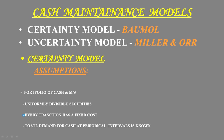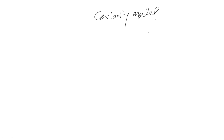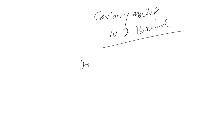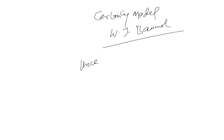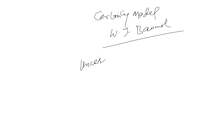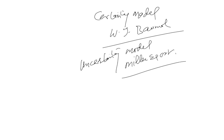The W.J. Baumol model is called the certainty model, and the Miller-Orr model is called the uncertainty model. We will discuss these 2 models and learn how cash management can be achieved with the help of these models.